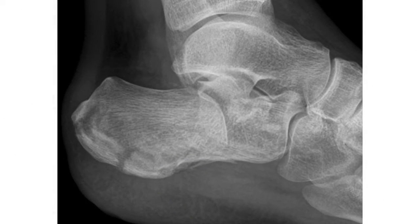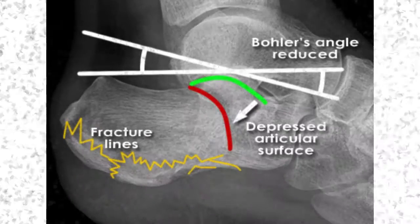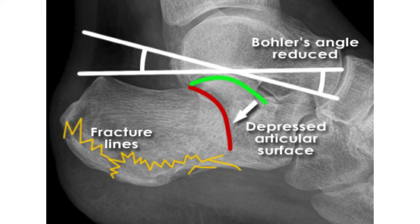Here is an x-ray of a very abnormal heel bone. You can see the fracture lines in orange. You can see the red line showing depressed articular surfaces moving downward. The Böhler's angle is decreased — it is actually 18 degrees in this case.